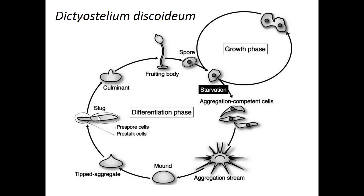This shows differentiation, which is really cool — these cells are differentiating and becoming different from those cells. Differentiation is a process that cells go through in development. As your body is developing, we all start as just an egg fertilized by a sperm cell, and that single egg cell becomes all the different types of cells in our body through a process of differentiation or specialization. That same thing is happening here.